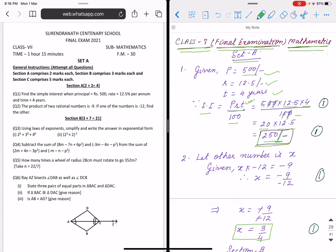Next question: The product of 2 rational numbers is minus 9. One number is minus 12, find the other. Let the other number be X, we suppose. What is given?